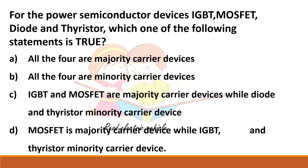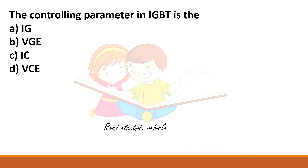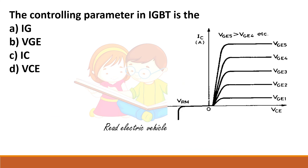For power semiconductor devices, which statement is true regarding majority and minority carriers? IGBT and MOSFET are not both majority carrier devices — only MOSFET is a majority carrier device. The controlling parameter of IGBT can be determined from its output characteristics; the gate-emitter voltage VGE is the controlling parameter.